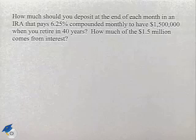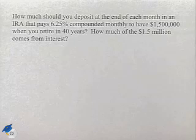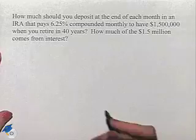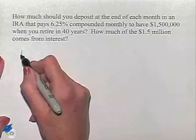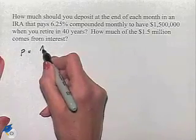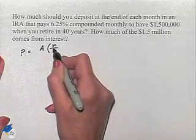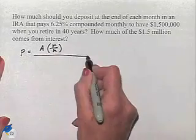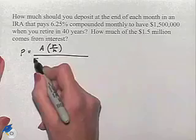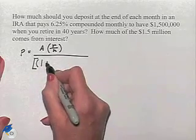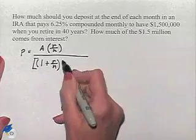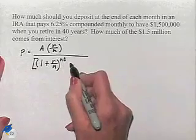And then, once we figure that out, how much of the $1.5 million comes from interest? The formula we'll use is P equals A multiplied times R over N in the numerator where our denominator is going to be 1 plus R over N to the NT power minus 1.